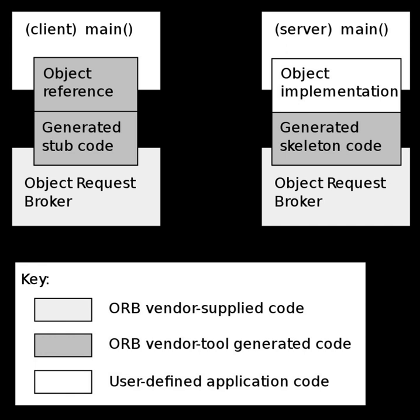CORBA marshals its data in a binary form and supports compression. IONA, Remedy IT, and Telefonica have worked on an extension to the CORBA standard that delivers compression, called ZIOP, which is now a formal OMG standard.